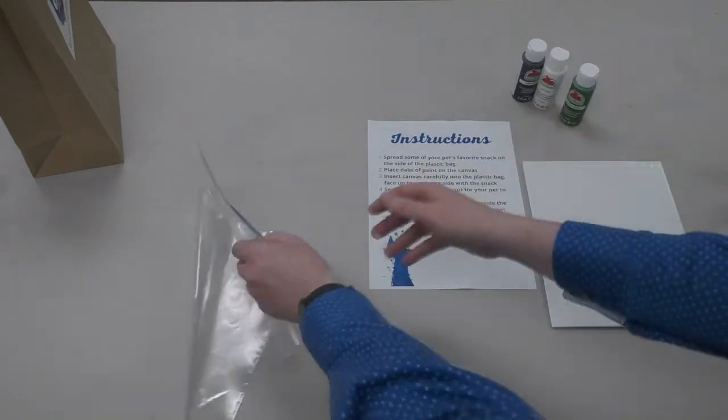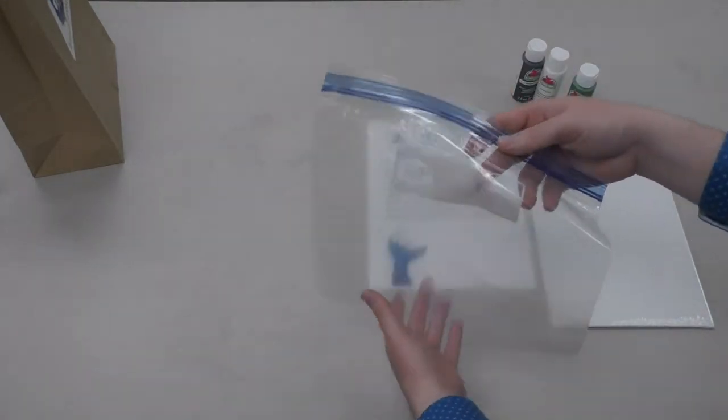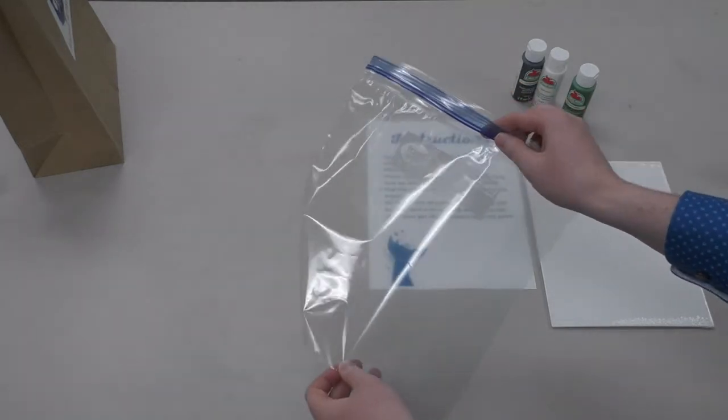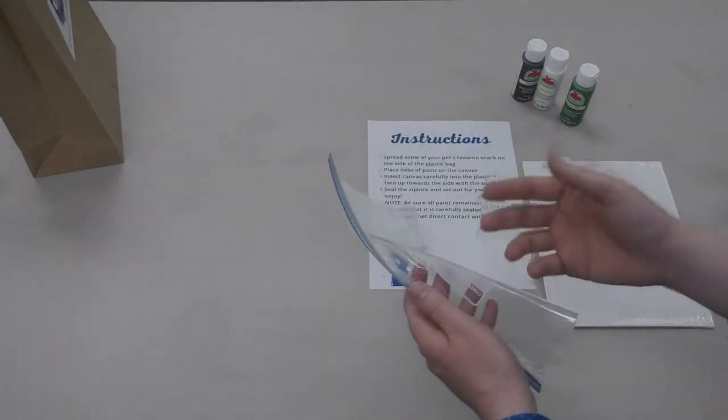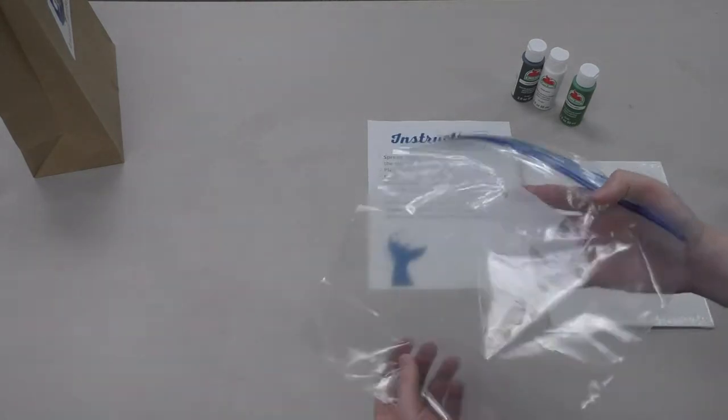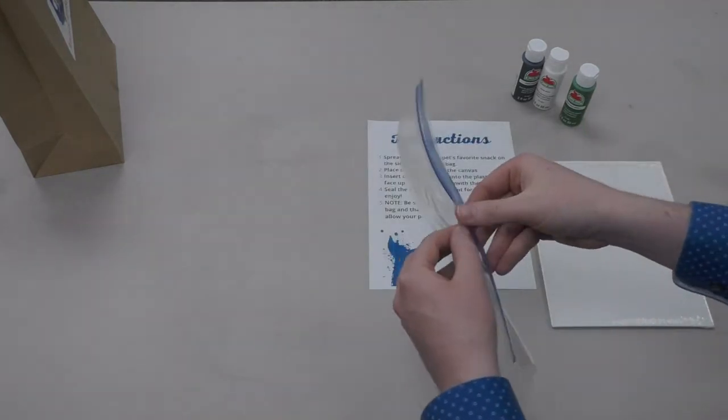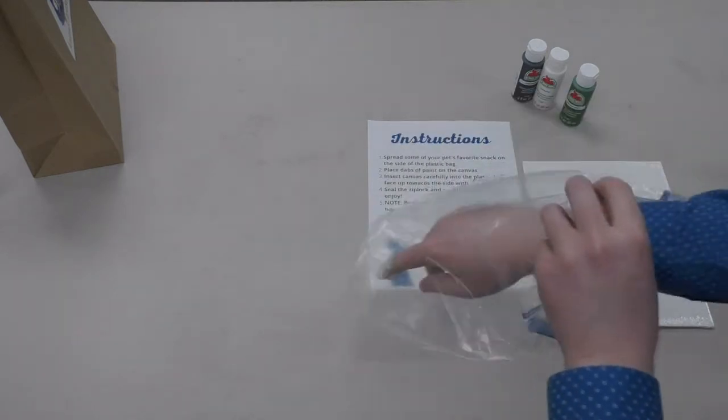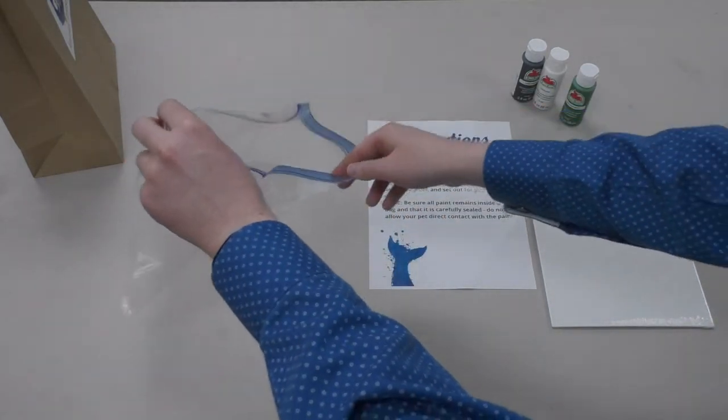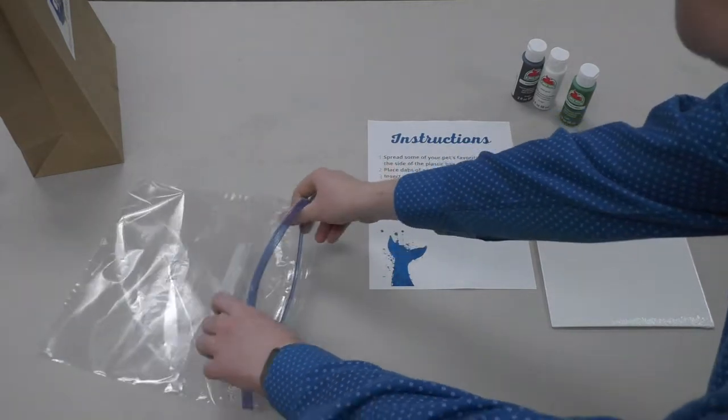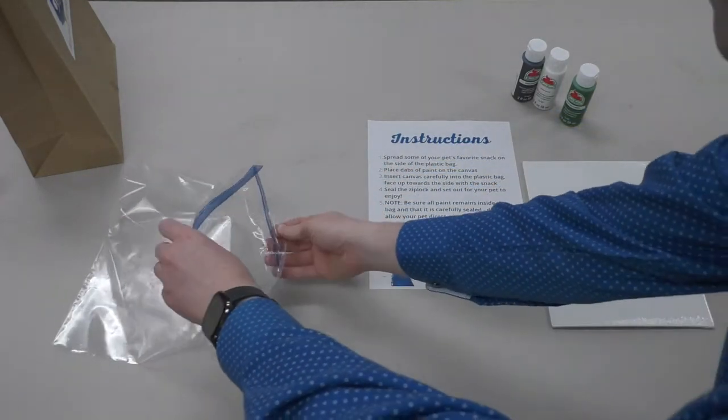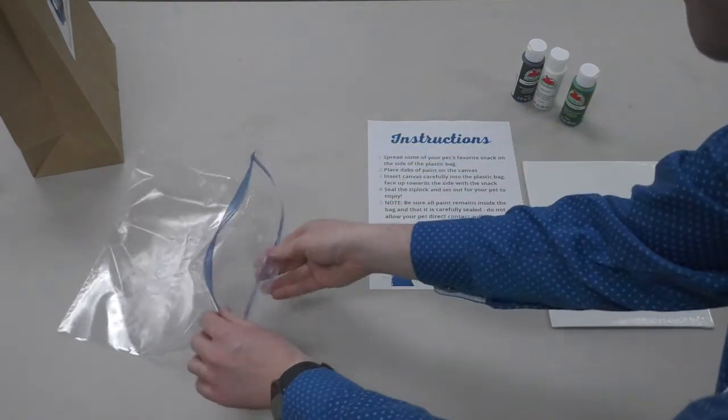First up, you'll want to get your bag ready to place the canvas inside. If the snack you're giving to your pet is something like peanut butter which spreads, we think it's easier to go ahead and smear it on the bag before putting the canvas inside. So just be sure your bag is nice and open and ready to go for that canvas as soon as you apply the paint to it. You'll appreciate that later because it's kind of hard juggling a lot of things at once.